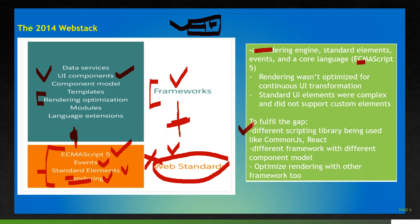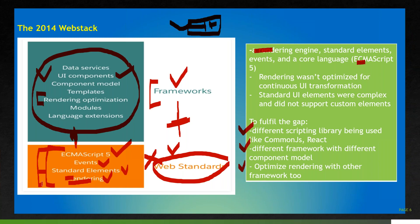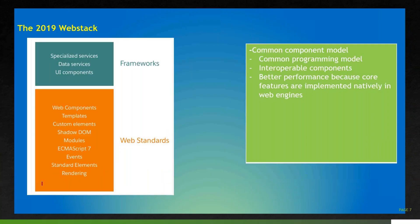Different scripting libraries were used to fill the gap, and everybody ended up with different frameworks with different component models and rendering optimizations. In 2014, many things depended on the framework rather than the web standard. But with time, the web standards evolved to bring all web components, web pages, and UI into a common programming model or common component model — and with this evolution we arrived at the 2019 web stack.